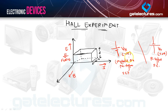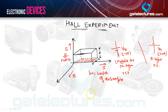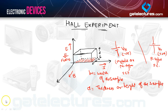When electrons are majority charge carriers, we consider this plate as a benchmark to decide whether the sample is a semiconductor or a metal. W is the width of the sample and D is the thickness or height of the sample. Current is taken in the x-direction, magnetic flux density in the z-direction, and the induced electric field intensity is in the y-direction.